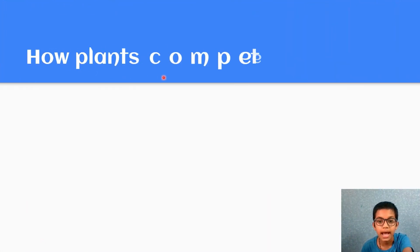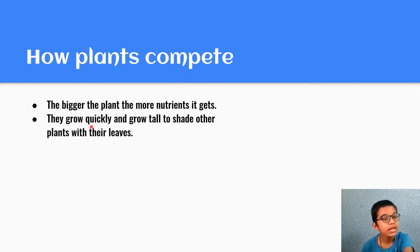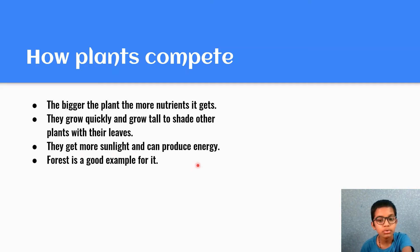How plants compete? The bigger the plant, the more nutrients it gets. They grow quickly and grow tall to shade other plants with their leaves. They get more sunlight and can produce more energy.